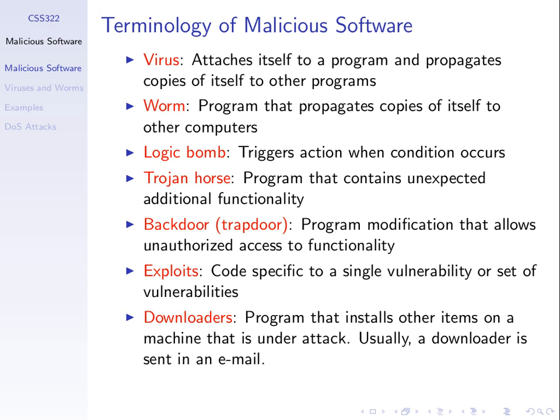A worm is an independent program. It doesn't attach itself to another piece of software — it's its own executable program that propagates copies of itself to other computers. A worm may be a program running on my laptop, and when connected to the internet it may find other hosts, create a TCP connection, copy itself to those other computers, and execute on those other computers — doing malicious things as it executes. A worm propagates by copying itself, but it's not attached to another program.